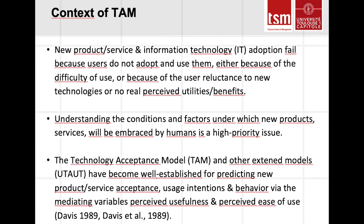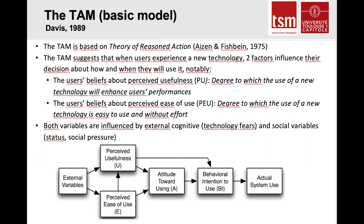The basic TAM model is based on the theory of reasoned action. This theory suggests that when users experience a new technology, two factors influence their decision: perceived usefulness, defined as the degree to which use of a new technology will enhance users' performance, and perceived ease of use, the degree to which use of the new technology is easy and without effort. Both variables are influenced by external cognitive variables such as technology fears and social variables such as status or social pressure.